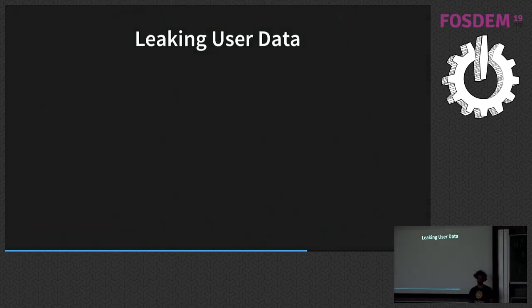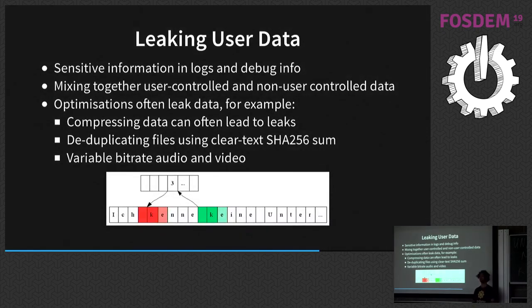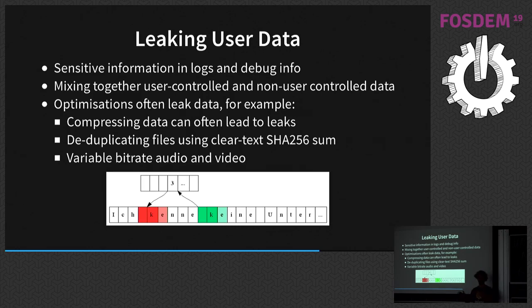Leaking user data is a constant struggle. Sensitive information in logs and debug info is a big concern, but even more important are subtler issues. Mixing together user-controlled data and non-user-controlled data can be very risky. For example, many encryption modes use padding — if you encrypt four characters at a time and the input is five characters, it rounds up to eight. If you mix user-controlled and attacker-controlled information, you could leak the length of the content, which is already leaking dangerous information.